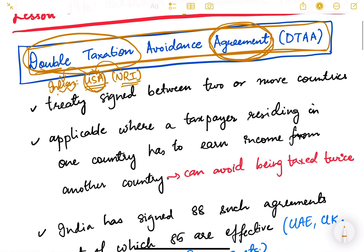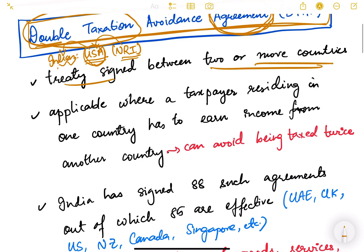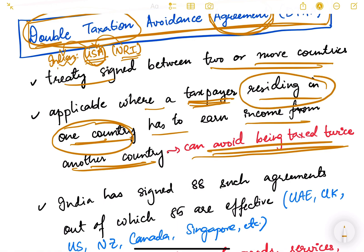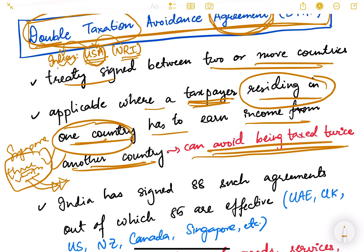This is a treaty signed between two or more countries. It is applicable where a taxpayer residing in one country earns income from another country, so they can avoid being taxed twice. For example, if an Indian resident goes to Singapore for three months and earns some money or receives an award and pays tax to the Singaporean government, when he brings that money to India, the Indian government will not ask him to pay income tax on it again.